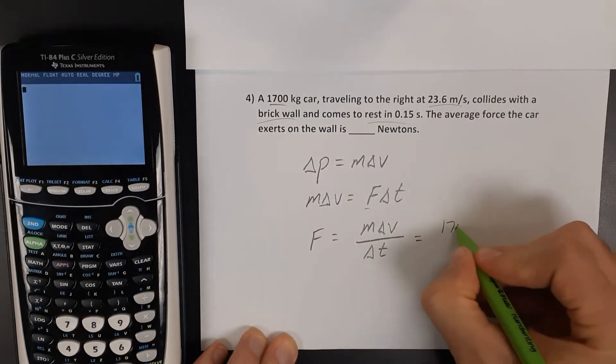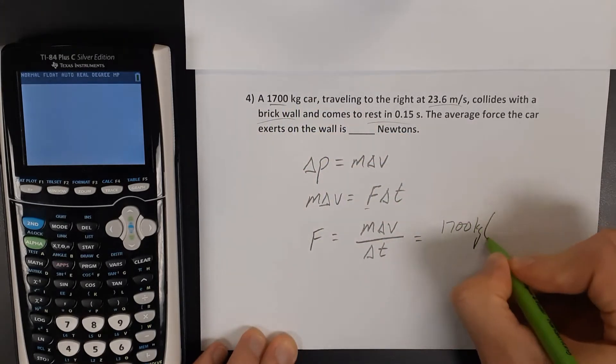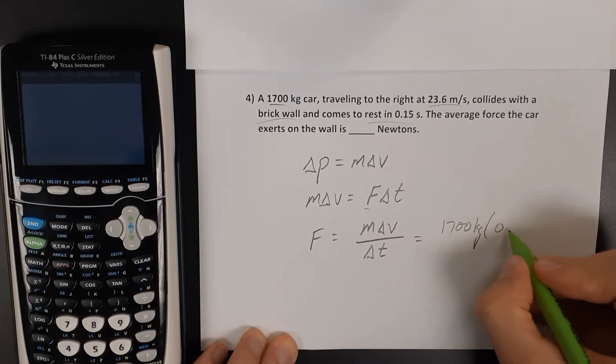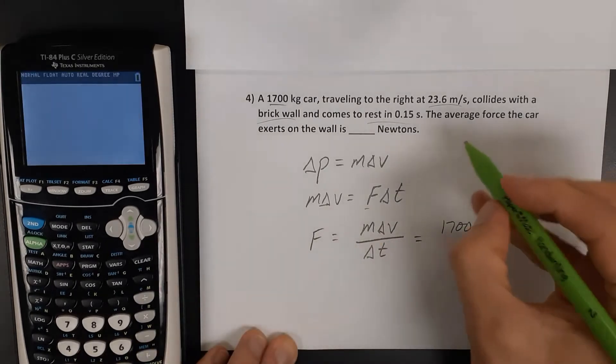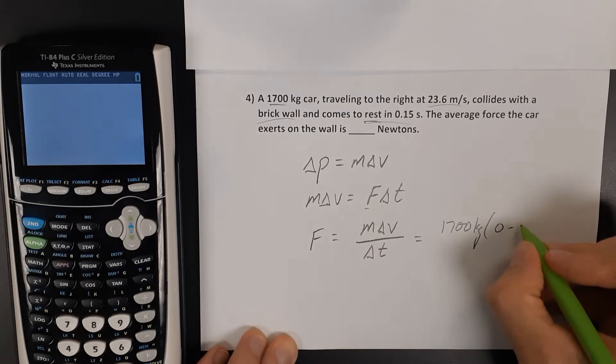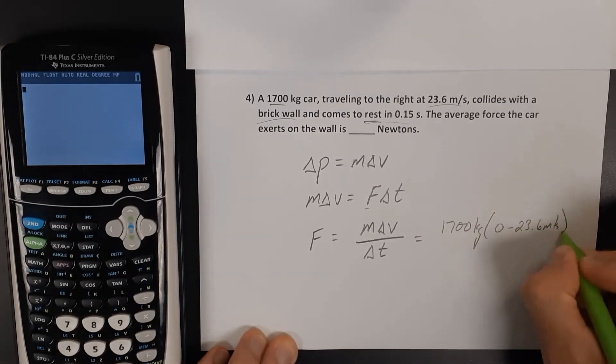We have a mass of 1700 kilogram car. Its final velocity was zero because it came to rest. It had an initial velocity of 23.6 meters per second.